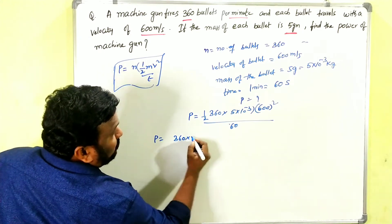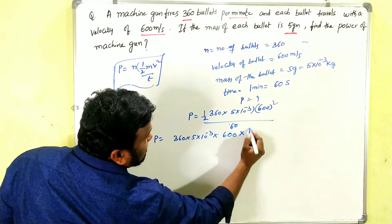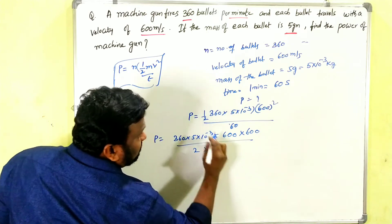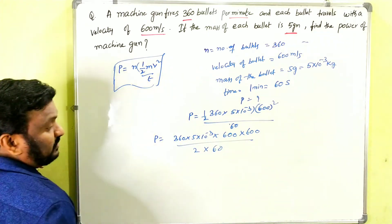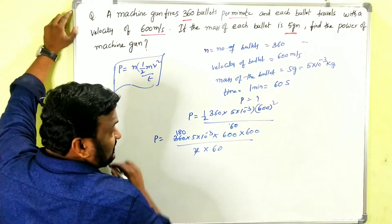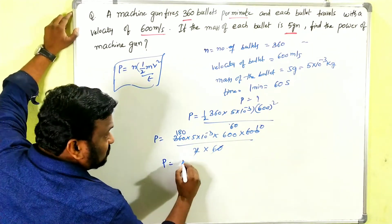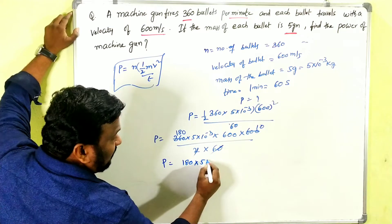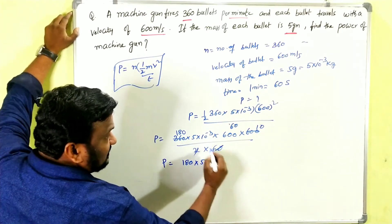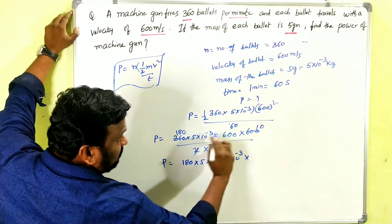P = 360 × 5 × 10⁻³ × 600 × 600 / (2 × 60). Simplifying: 360 divided by 2 gives 180, and 180 divided by 60 gives 3 — wait, 360/(2×60) = 3. So we get P = 3 × 5 × 10⁻³ × 360000. Further: 180 × 5 × 10⁻³ × 10 from simplifying the 600s.